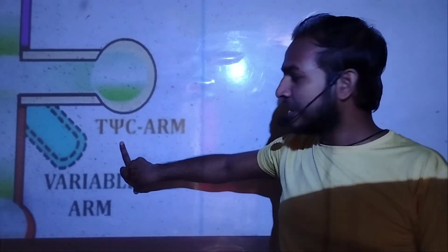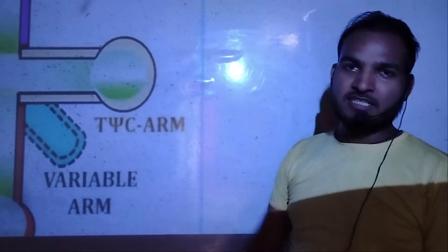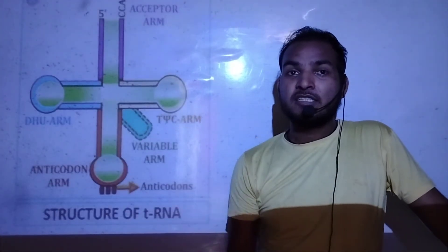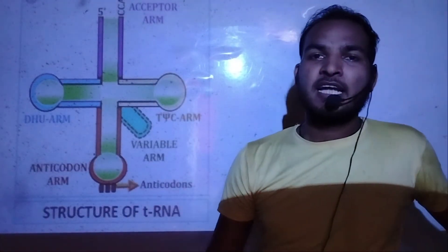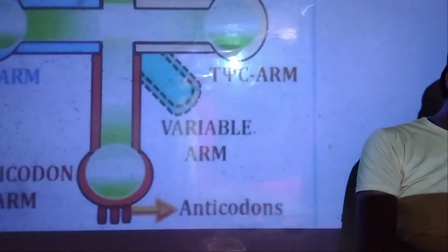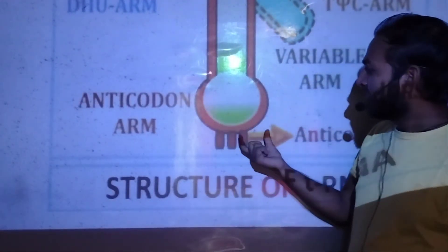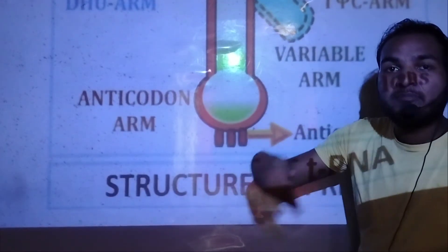This sequence comes in this way, so this is the name of the arm. The third part is called anti-codonic arm. This is the anti-codonic arm because it binds to the mRNA codon.